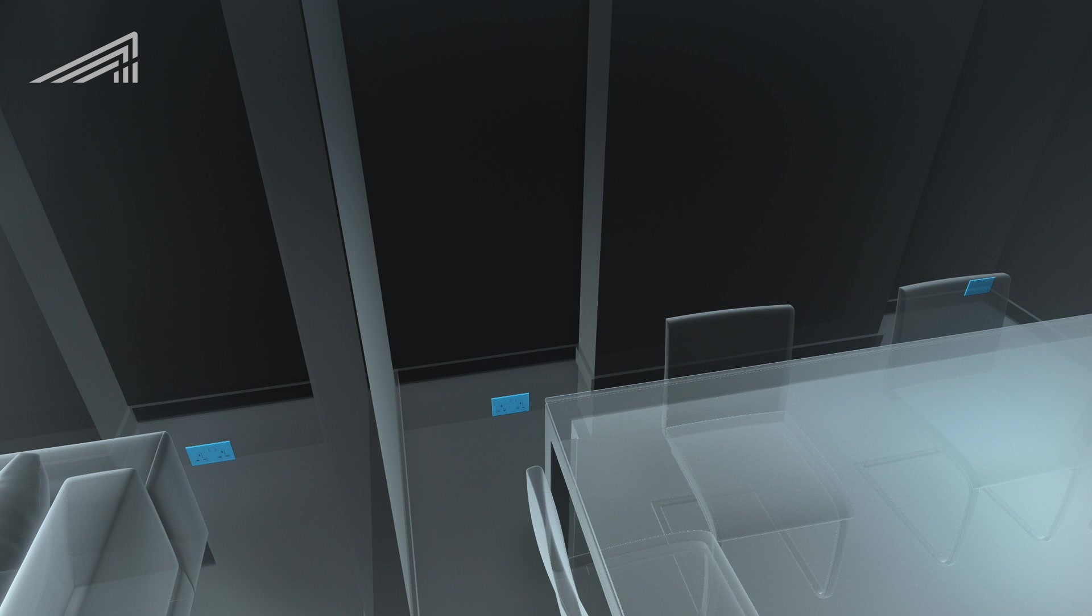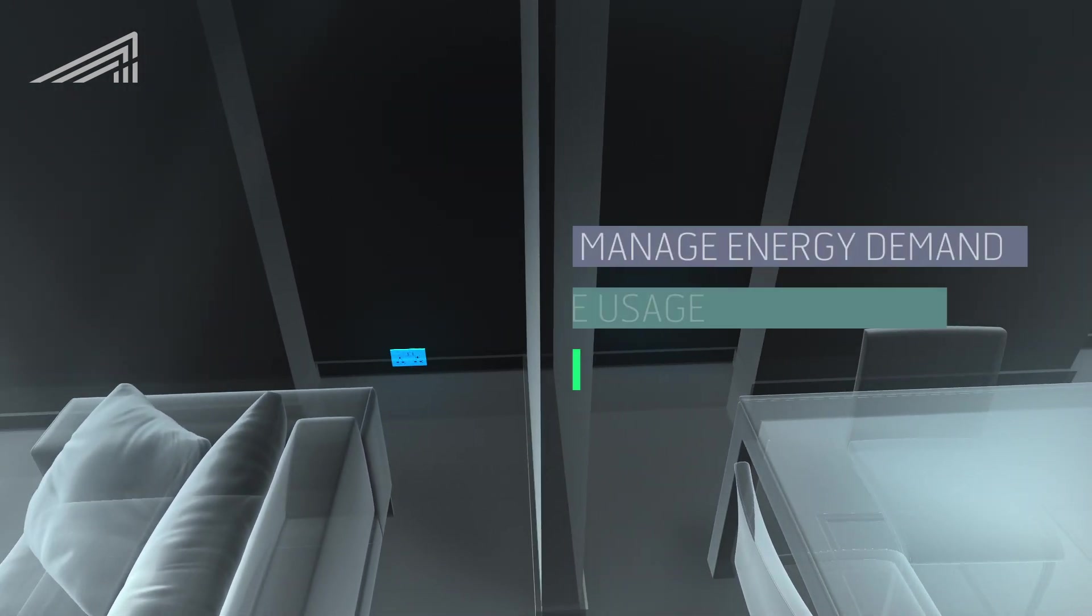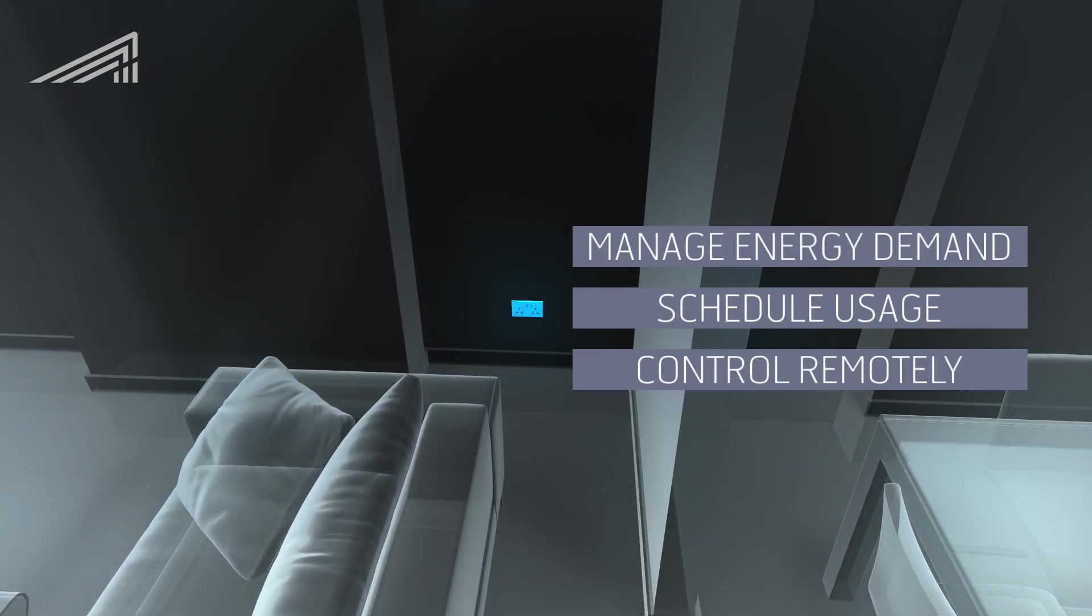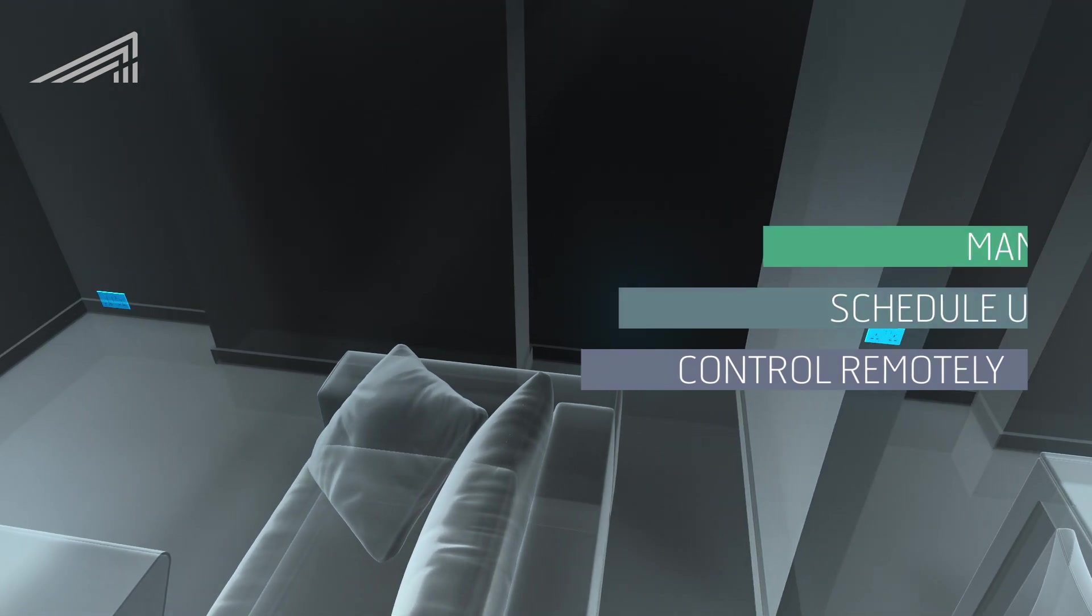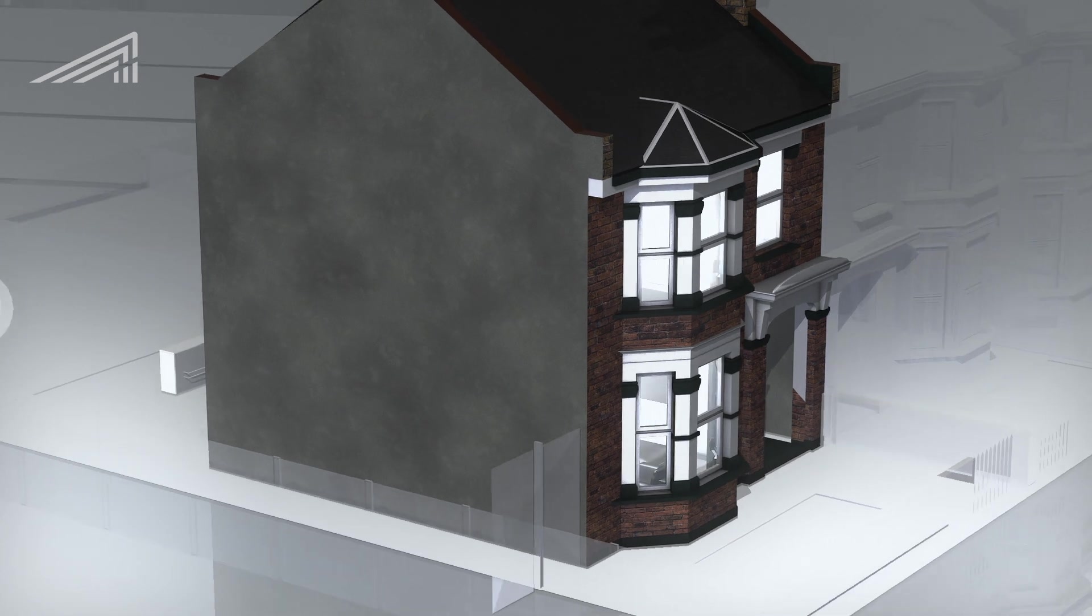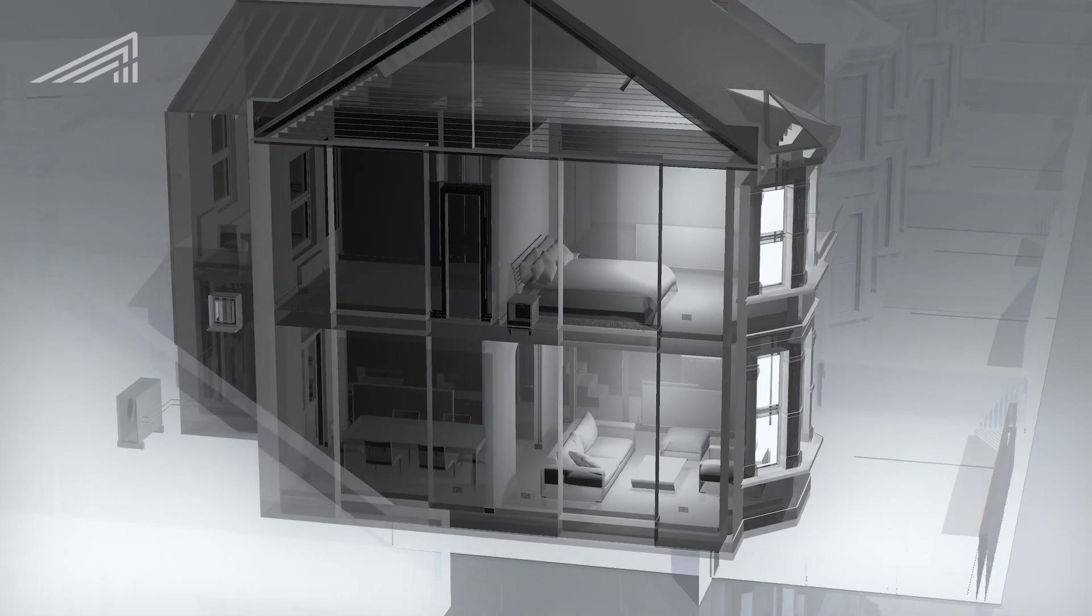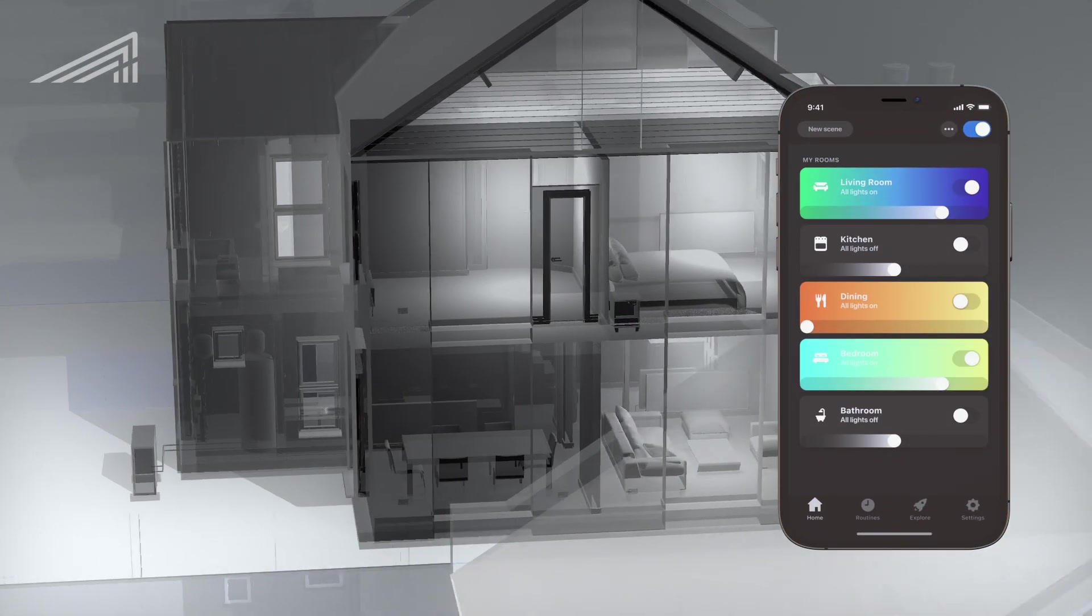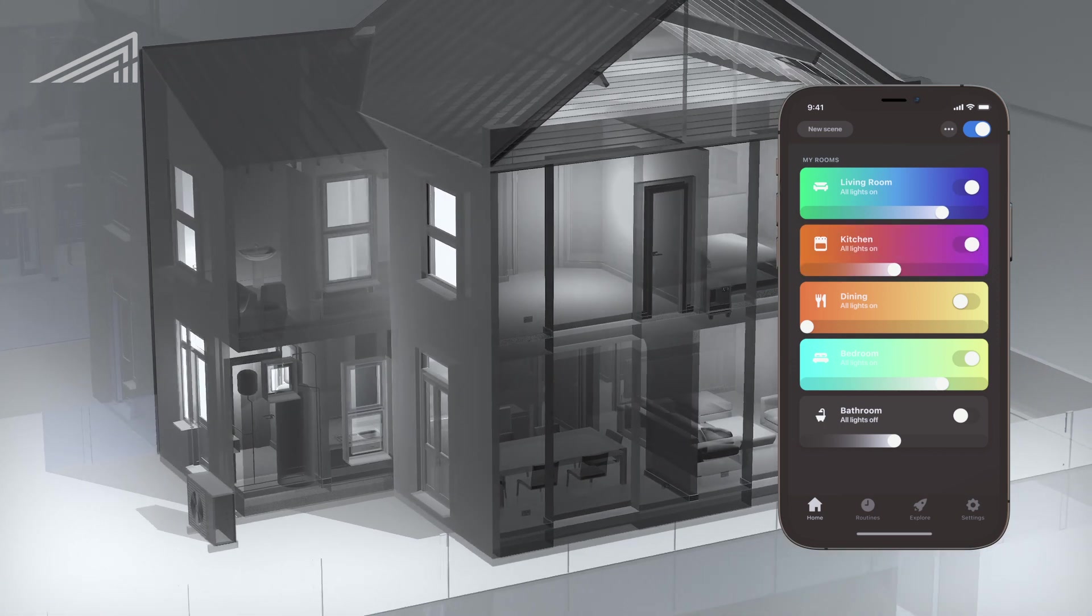We installed smart power sockets. They allow better management of energy demands, scheduling usage and controlling appliances remotely. Smart LED bulbs were installed throughout the house. They help reduce usage by enabling remote access and allowing lighting to be automated.